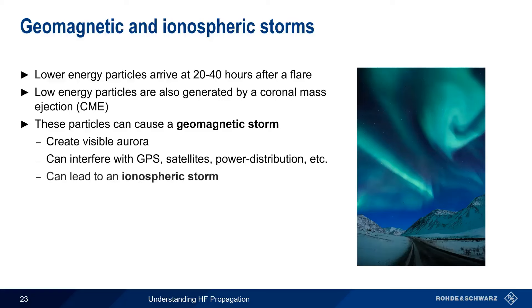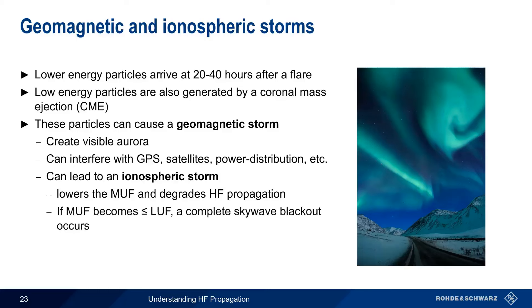Geomagnetic storms don't directly interfere with HF propagation, but they can create ionospheric storms. Ionospheric storms lower the maximum usable frequency and degrade HF propagation. And as mentioned earlier, if the MUF becomes higher than the LUF, an ionospheric storm can create a complete HF skywave blackout. One final note, it's possible to have a geomagnetic storm without an ionospheric storm, but the converse is not true. All ionospheric storms start out as geomagnetic storms.